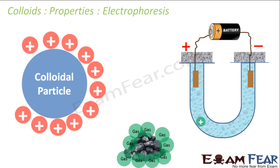Colloids have charge on them. In fact, the colloid itself is not inherently charged — in colloidal particles the charge is adsorbed on the surface. So technically, the colloidal particle has charge because the charges are adsorbed on its surface, similar to how gas is adsorbed on charcoal. Similarly, charges are adsorbed on the colloidal particle.